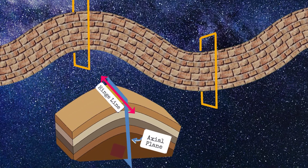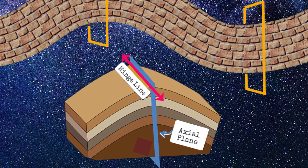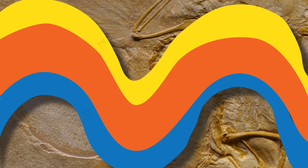The hinge line is the axis of the axial plane, which tells you what direction the plane is facing. The youngest rocks are always at the centre of the synclines, while the oldest rocks can be found at the centre of the anticlines. And this is going to become important later.